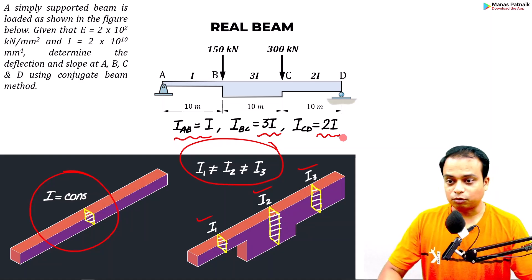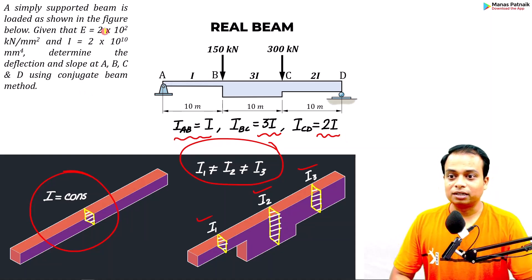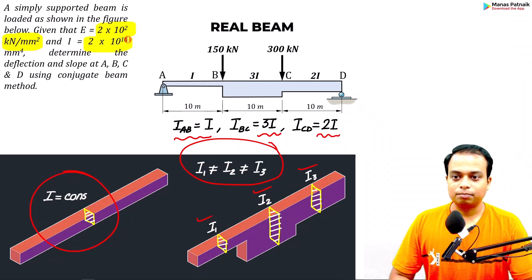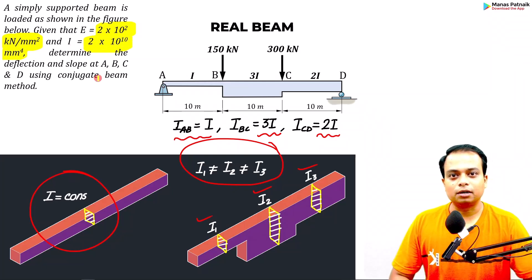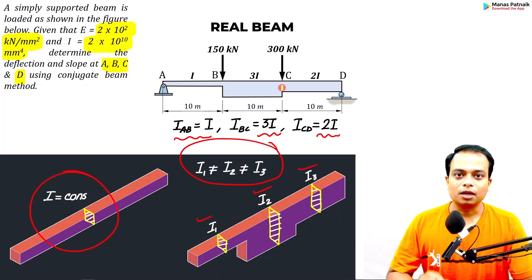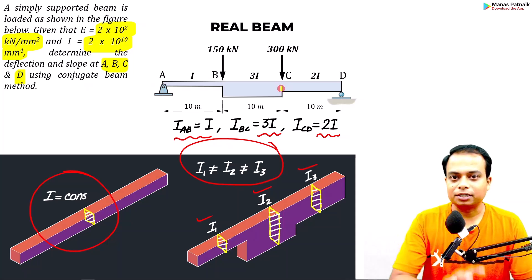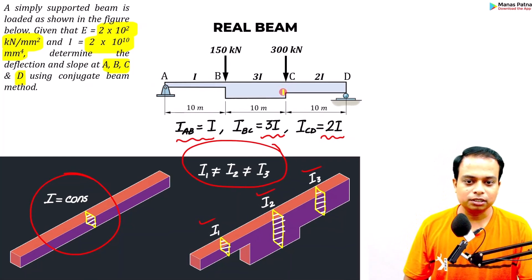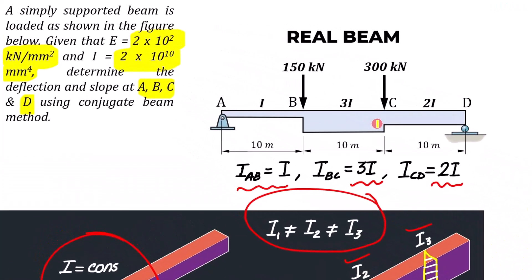Young's modulus is given in kilonewtons per mm squared, and the area moment of inertia is also given. We need to work out the value of slope and deflection at all three important points. The approach is very simple.